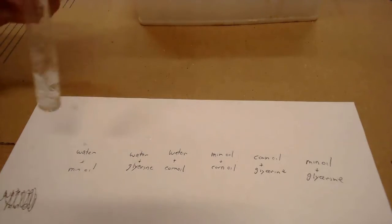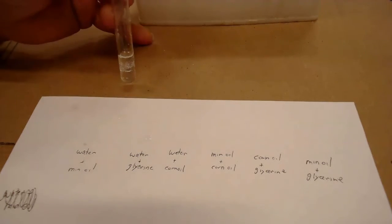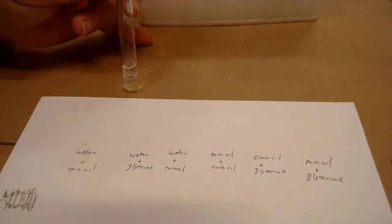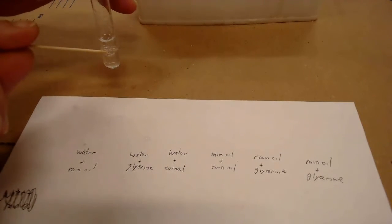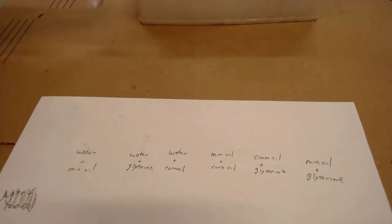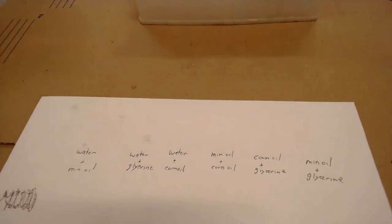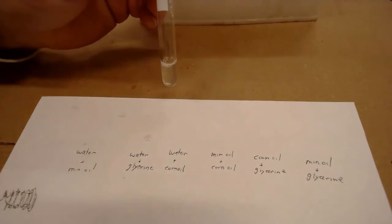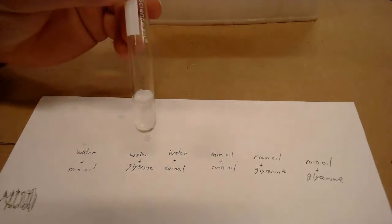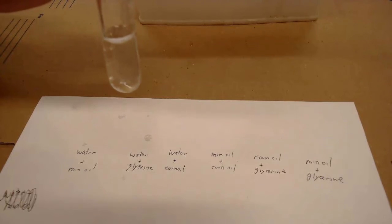For our first tube, we shake it up. Right away you can see a separating line — you can see two layers. They do not mix. Mineral oil and water do not mix — they're immiscible. The second one is glycerin. If you give it a little bit of a shake and look closely, there's no line there. The water and the glycerin actually mix together.